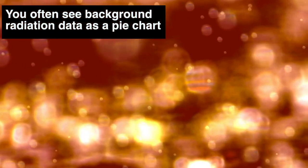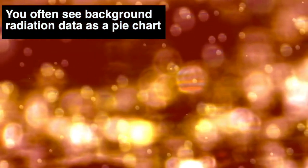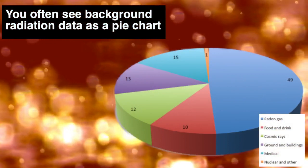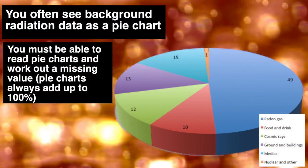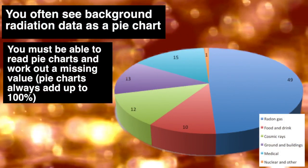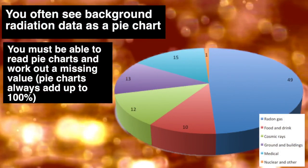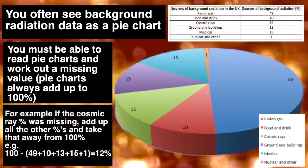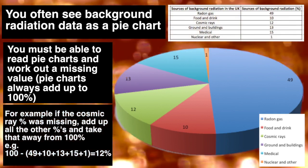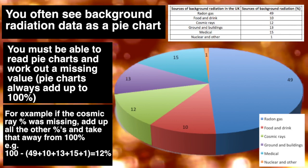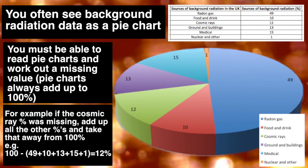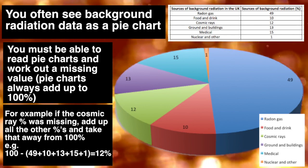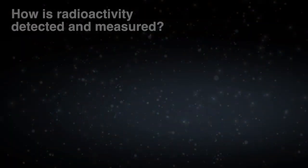You often see background radiation data presented as a pie chart. You must be able to read pie charts and work out a missing value. Pie charts always add up to 100%. For example, if the cosmic ray percentage was missing, add up all the other percentages and take that away from 100%: 100 minus (49 + 10 + 13 + 15 + 1) equals 12%.